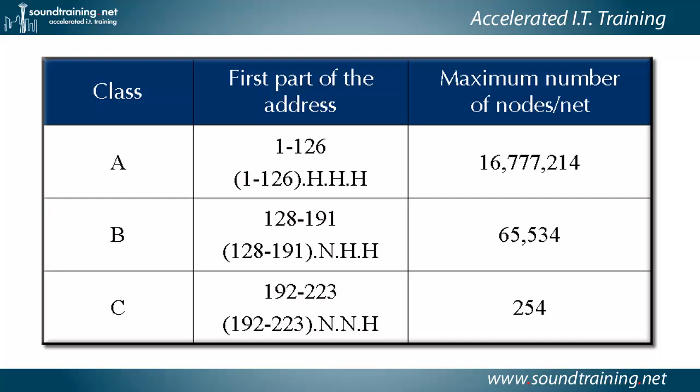For a class C, the first octet must fall within the range of 192 to 223 inclusive. The first three octets were used for the network portion and the fourth octet for the host portion.